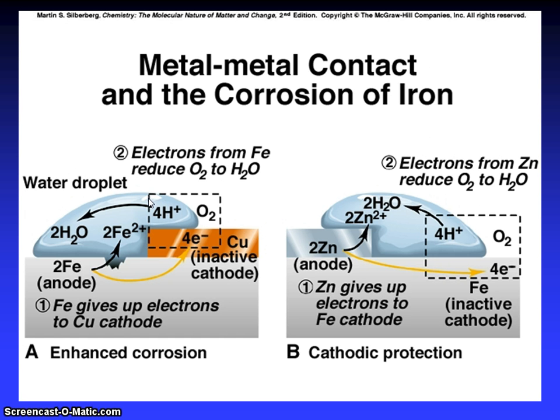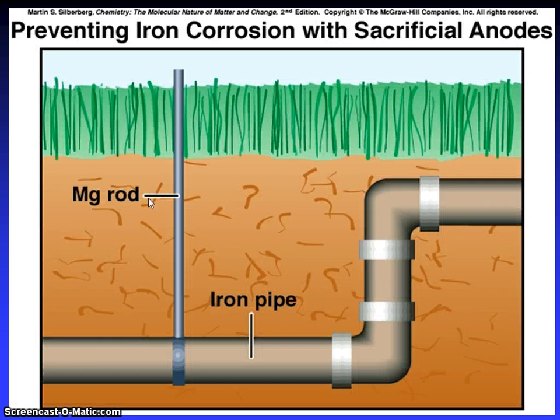Metal-metal contact and the corrosion of iron. Electrons from Fe reduce O2 to water. Water droplets. Electrons from zinc reduce O2 to water. Fe gives up electrons to copper cathode. Zinc gives up electrons to Fe cathode, inactive cathode. A: enhanced corrosion. And B: cathodic protection. Preventing iron corrosion with sacrificial anodes, magnesium rod, iron pipe.